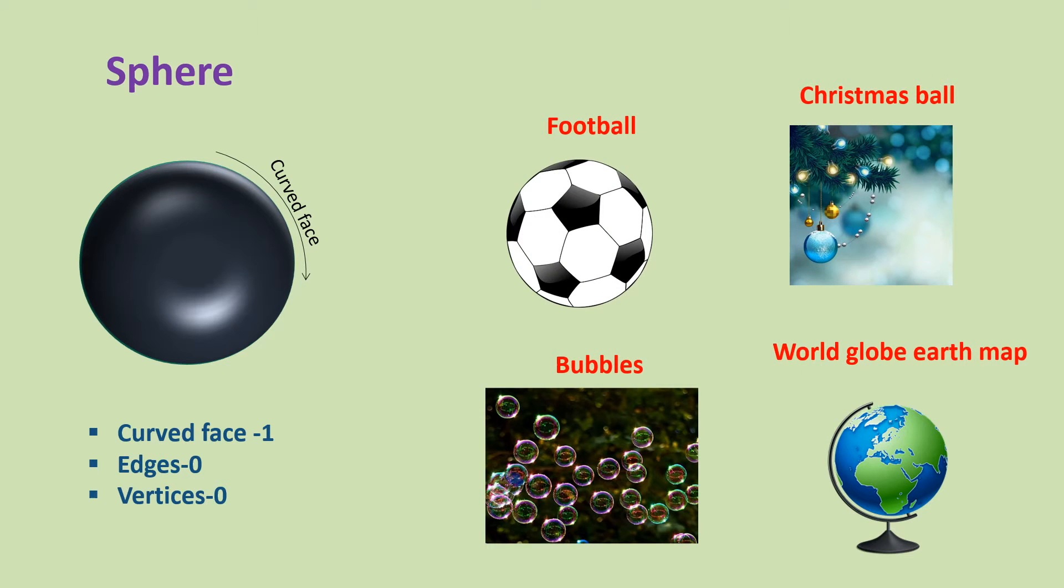We can see sphere shape in numerous objects: football, Christmas ball, bubbles, world globe, earth map are a few examples.